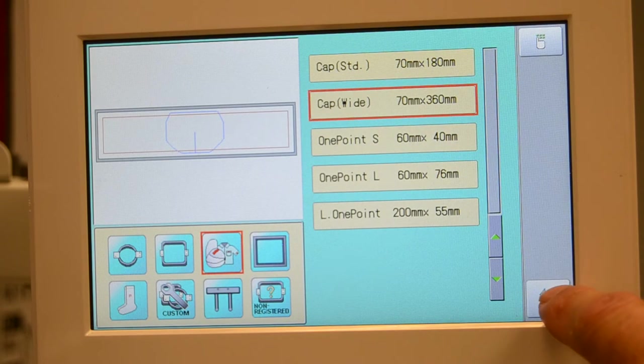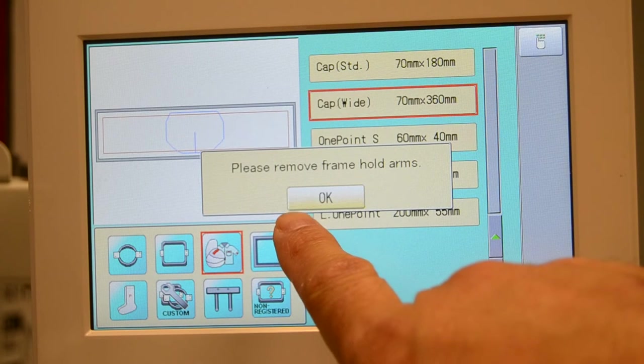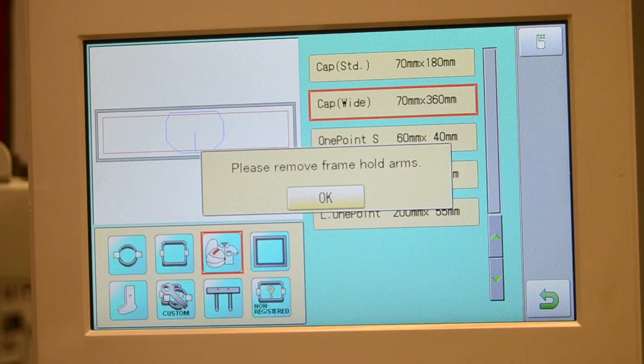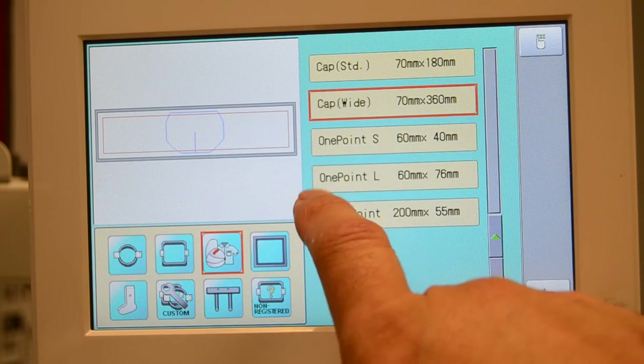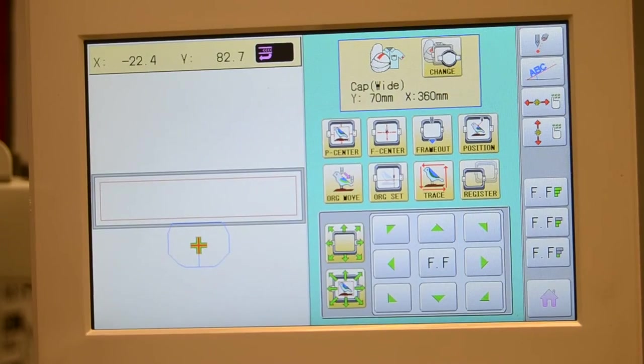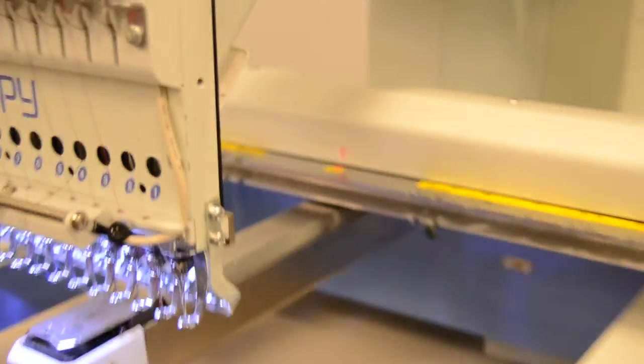Once that's chosen, we'll go ahead and navigate back out one screen. It's going to remind us that we need to remove the arms, which we already have. And the next thing we want to do is if we look at the machine itself...